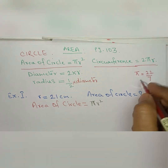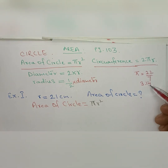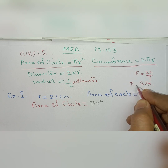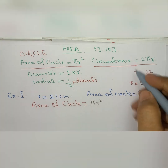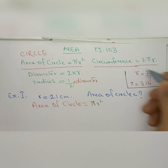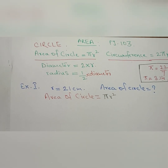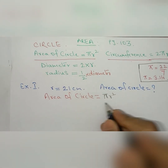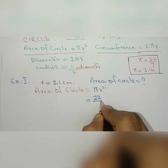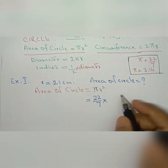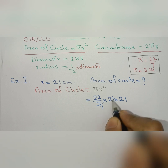Both values of π — 22/7 or 3.14 — can be used. You will memorize the value of π easily as you keep solving. Now on to our question: I have written the formula, and I am taking π as 22/7. The value of r given is 21 cm, so r squared is 21 into 21. After cancellation, 7 goes into 21 three times.